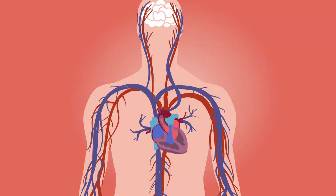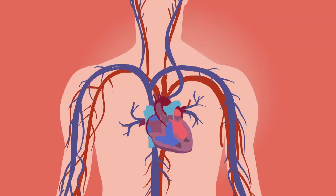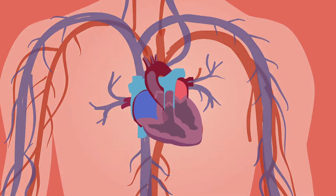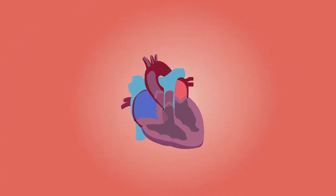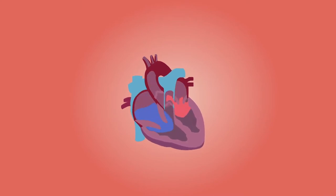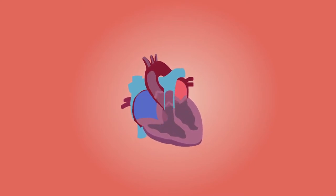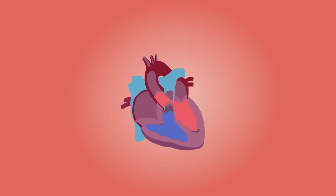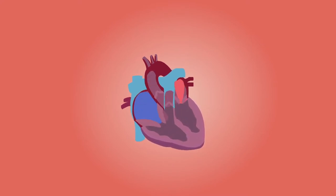In one heartbeat, blood enters and exits the heart from both sides. Diastole is when the heart relaxes and fills with blood. Both the right and left atrium fill with blood.